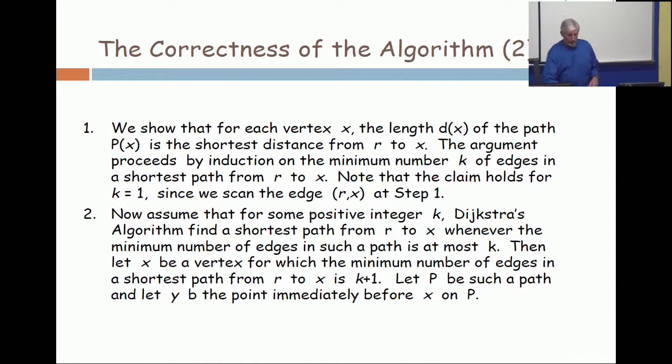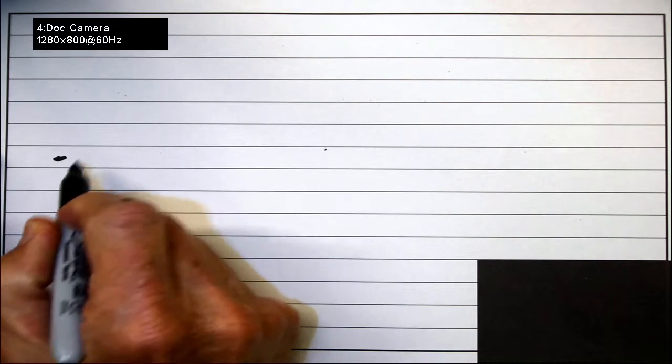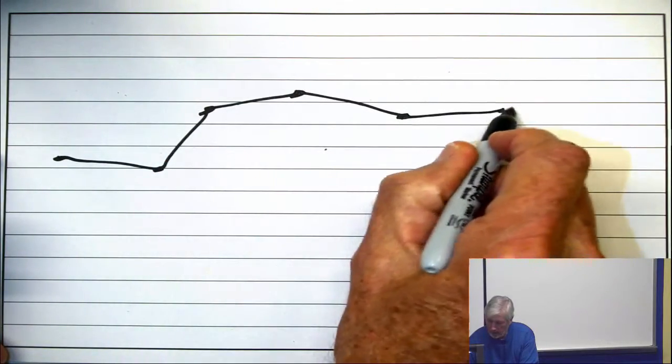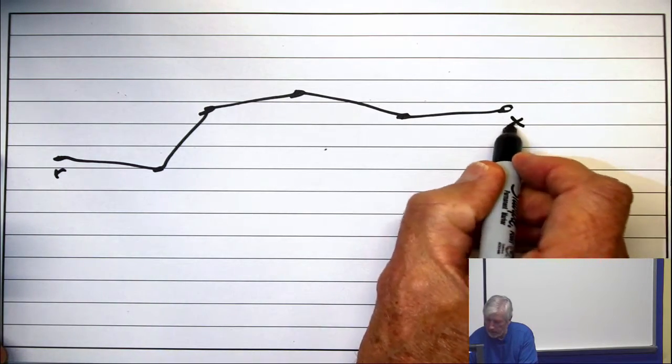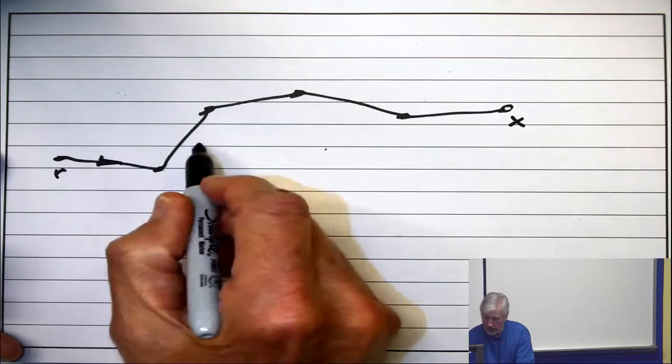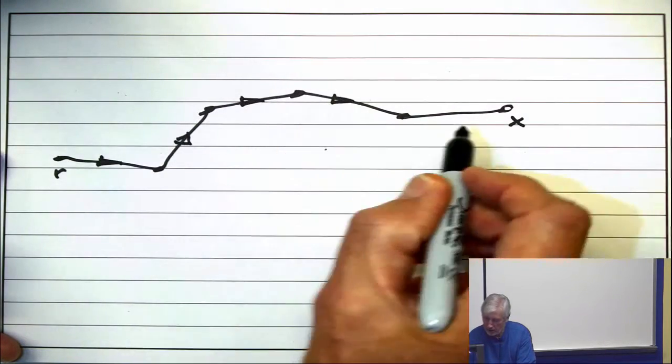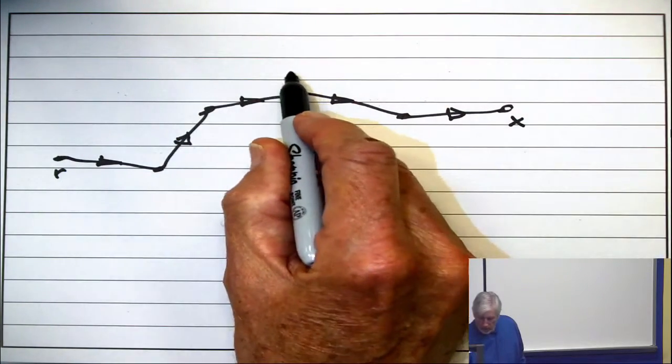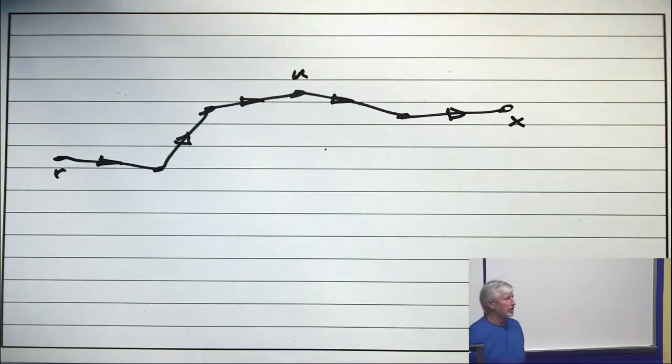Now, what we are using is an important property about paths. So if this is the root, and here's the vertex x, and this is an optimum path from the root to x, suppose this is some vertex u here. Here's a path from the root to u. Is that a good path?